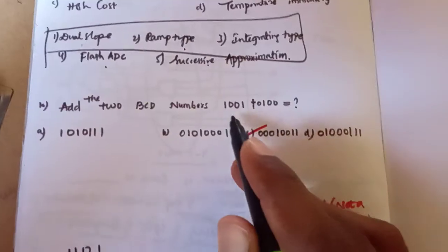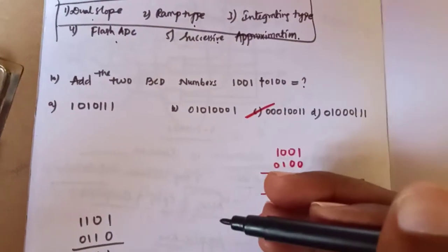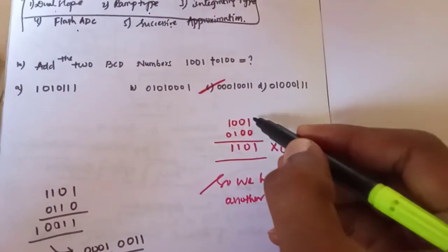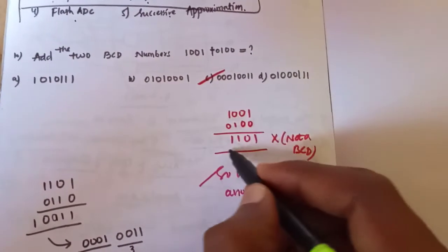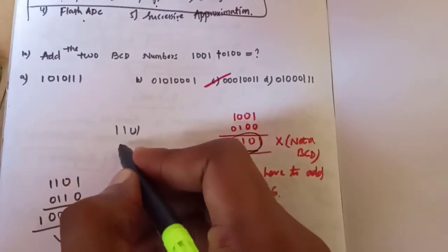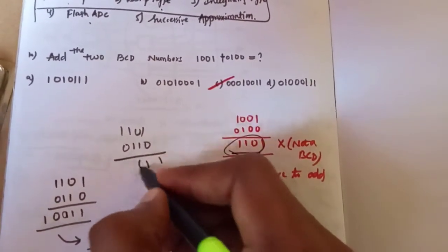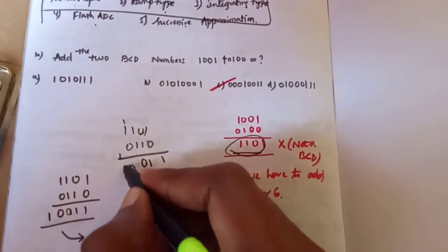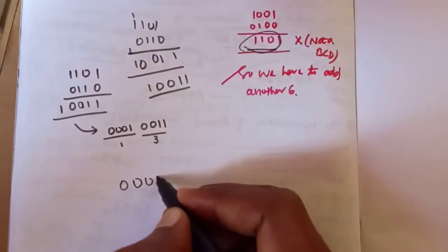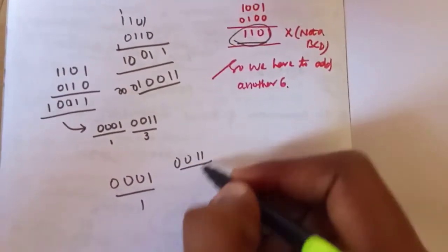Add two BCD numbers: 1001 plus 0100. Adding bit by bit: 1 plus 0 is 1, 0 plus 0 is 0, 0 plus 1 is 1, 1 plus 0 is 1. The result is 1101. Since this is a valid BCD result, we split it as 0001 and 0011, giving us 1 and 3. So the answer is 13.